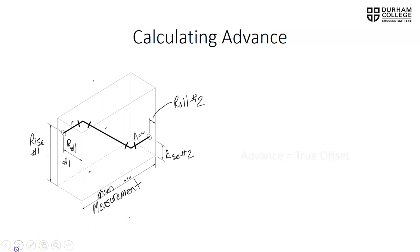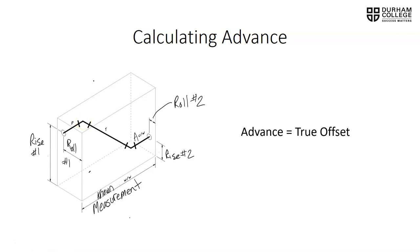Calculating our advance: in a 45-degree rolling offset, our advance is equal to our true offset. If I place my cursor on the 45-degree elbow — between the P and T pipe — and draw an imaginary line straight down, then to the right to connect with the other elbow, I make an imaginary right-angle triangle. The bottom of that triangle, which runs parallel to pipe A, is the advance dimension.